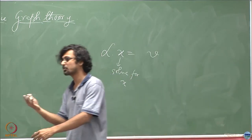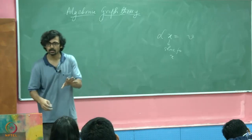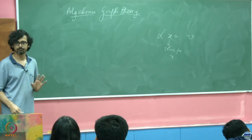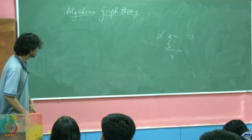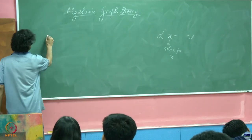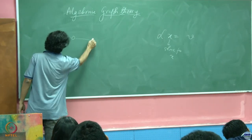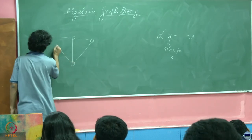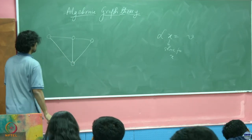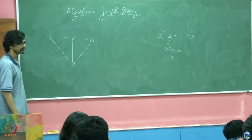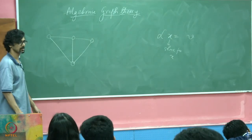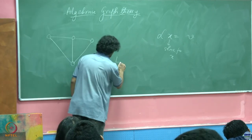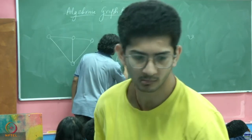For that we need another description of the Laplacian. Until now we have seen the Laplacian given by D minus A — degree minus adjacency. Now we will define another matrix. Let us not take a regular or complete graph; let us just look at this graph to make things more interesting. We will define a matrix called the incidence matrix.